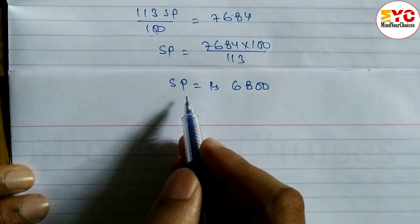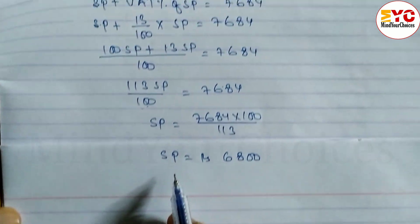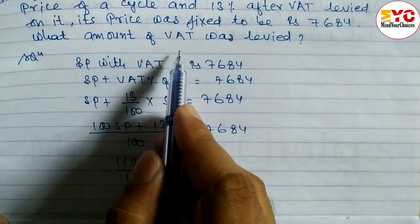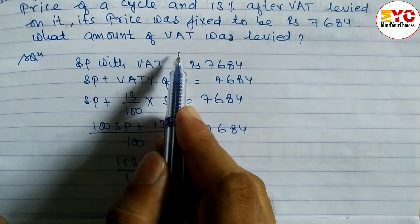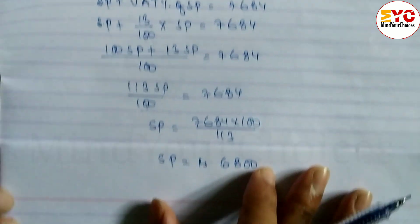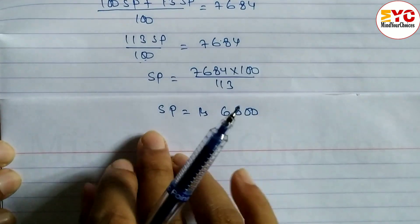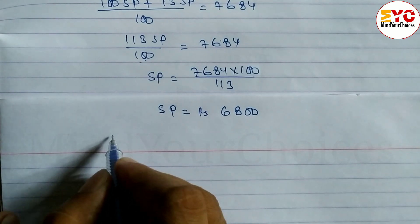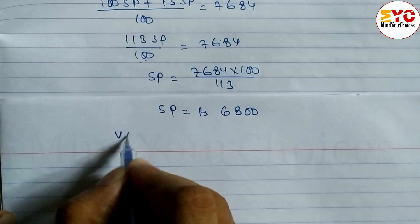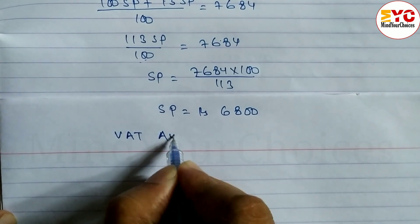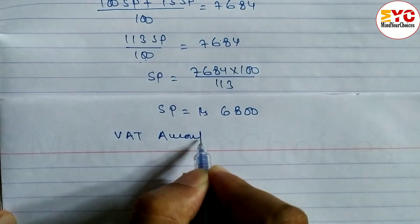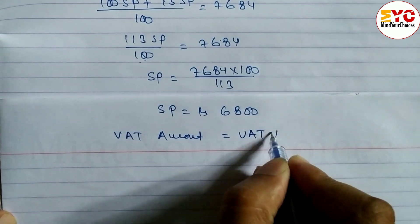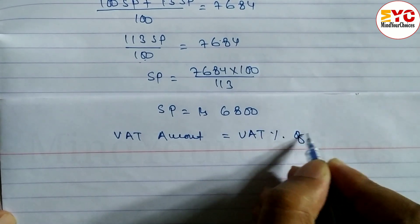So this is the value of SP. Now what we have to find is the amount of VAT. After finding the value of SP, we can find the VAT amount — no need to find the mark price. The formula for VAT amount is: VAT percent of SP.